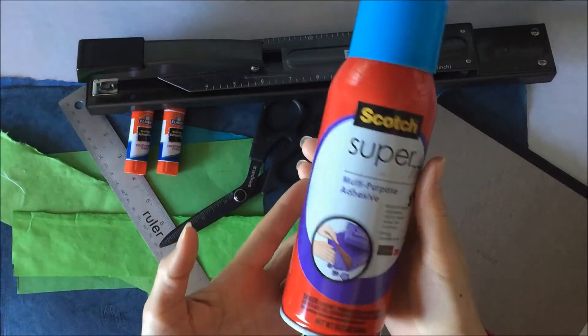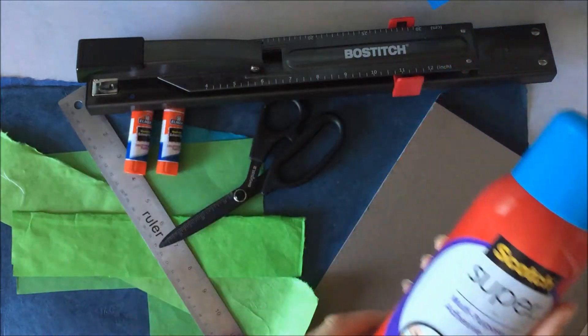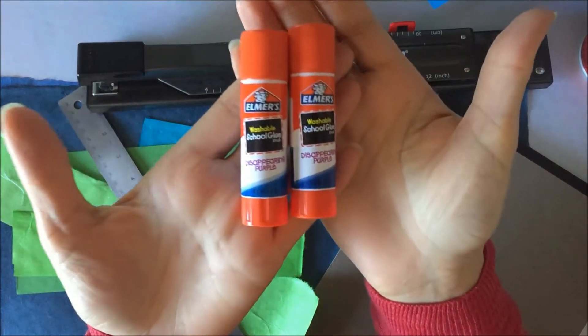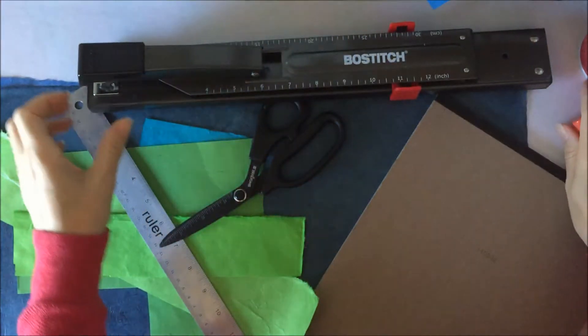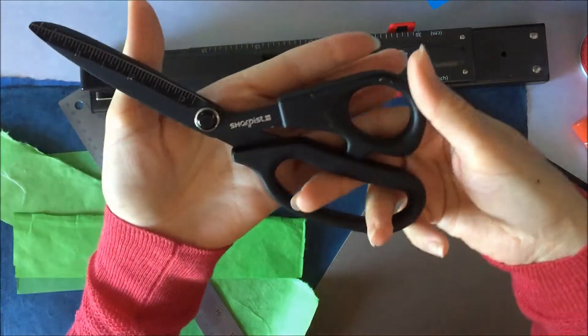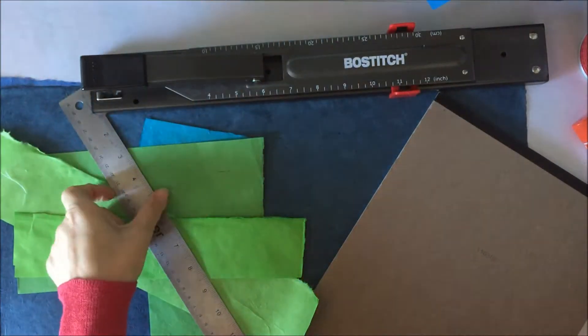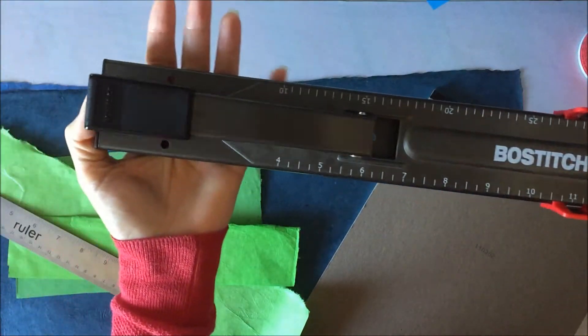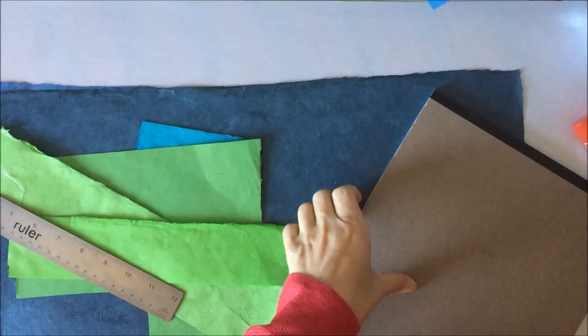So first up, you'll need some spray adhesive. And if you don't have spray adhesive, you can use some glue sticks. And then we'll need a pair of scissors. I prefer using non-stick scissors for this project with all the adhesive that we're using. And a long-reach stapler, which is heavy-duty, so it can staple through quite a few sheets of paper.